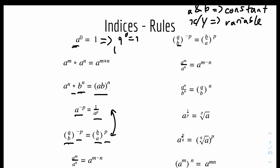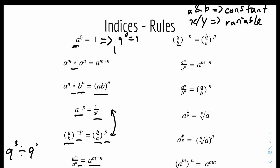Next we have: A to the power of M divided by A to the power of N equals A to the power of M minus N. This is basically the divide rule — you subtract the powers. It's similar to the times rule: if it's multiplication you add, if it's division you subtract. For example, 9 to the power of 3 divided by 9 to the power of 2 equals 9 to the power of 1, because 3 minus 2 equals 1.